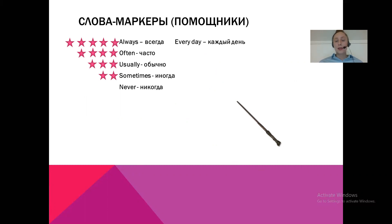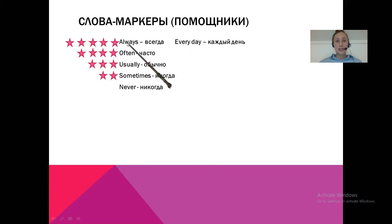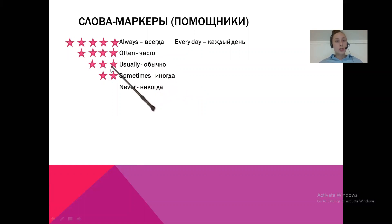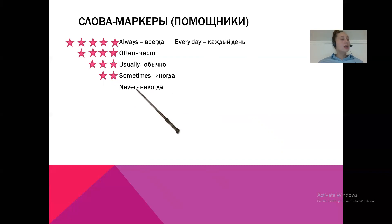Ещё у нас есть слова-маркеры — наши помощники, которые помогают определить, что это действие регулярное и относится к Present Simple. Чем больше звёздочек, тем чаще действие делается: always — всегда, или every day — каждый день. Потом реже: often — часто; usually — обычно; sometimes — иногда; и вообще не делается — never, никогда. Например: I never wake up late on Saturdays — я никогда не встаю поздно по субботам. Это тоже будет Present Simple.